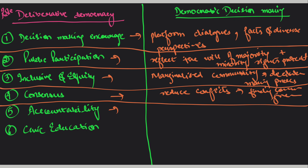Accountability कैसे बढ़ती है? आप ऐसी mechanism create करते हो जिससे decisions track हो सकें और जिनके पास power है वो public के लिए answerable रहें। इसके लिए आपको पहले informed रहना पड़ेगा — कि सरकार कर क्या रही है, क्या steps उठा रही है। ऐसा नहीं होना चाहिए कि पीछे से कुछ change हो और आपको पता भी न हो — तब आप participate ही नहीं कर पाओगे।